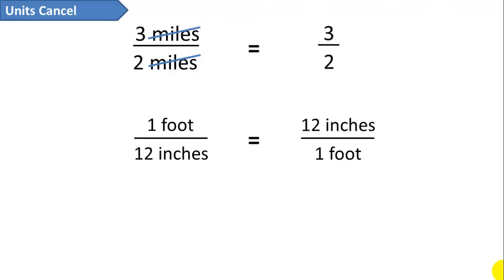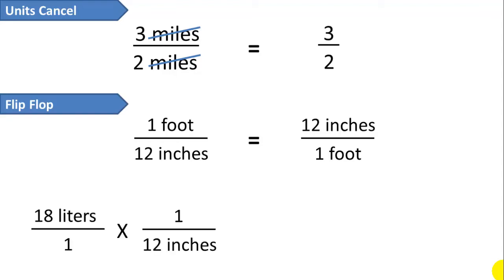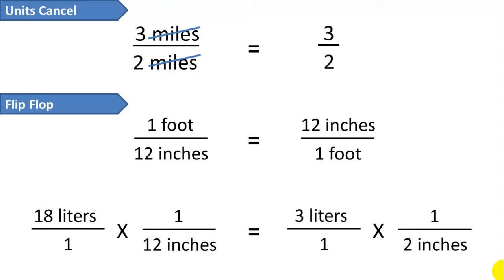Next, when you're dealing with conversion rates for different units, normally you cannot just invert a fraction, but with unit conversion rates you can — because one foot per 12 inches is the same thing as 12 inches per one foot. Those are equivalent statements. I'll call this the flip-flop rule. And lastly, we want to reduce our fractions whenever possible. The 18 and 12 are both divisible by six, so we can simplify to three over two. We'll call this the diagonal reduce rule.